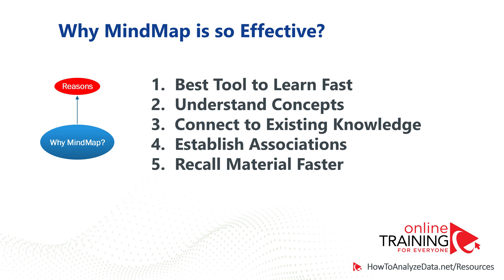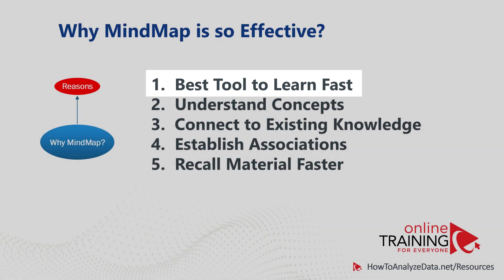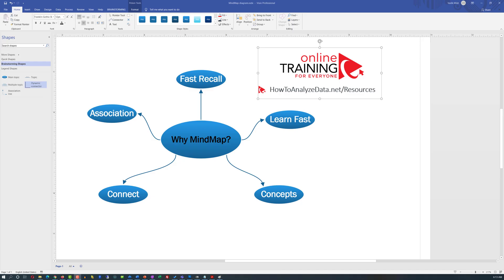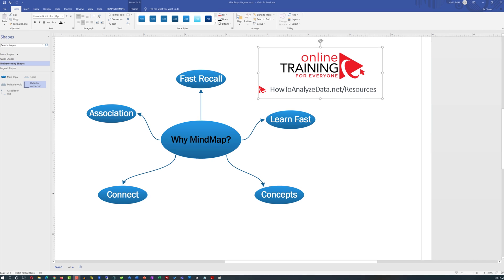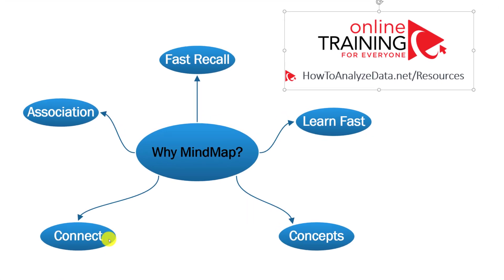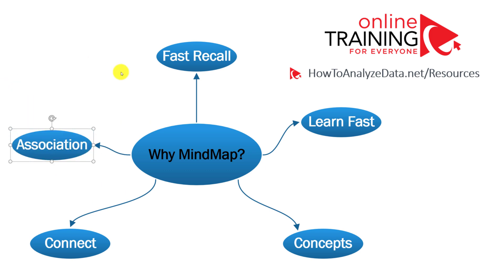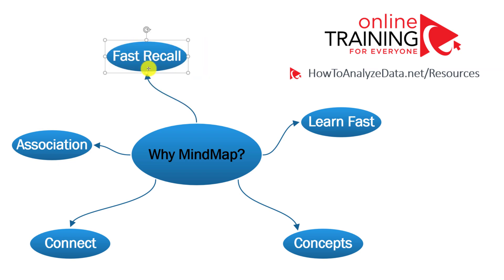Why is mind mapping so effective? There are five main reasons. It is the best tool available today to learn material fast. Mind mapping allows you to quickly understand important concepts, connect information you're learning to existing knowledge you already have, build associations with existing topics you already know, and recall material that you're learning much, much faster.